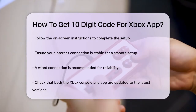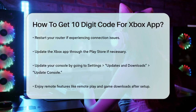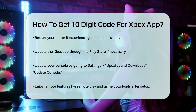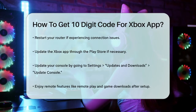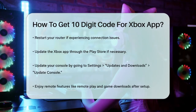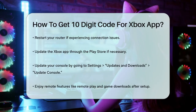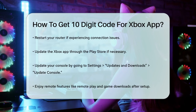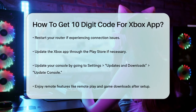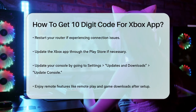If this happens, try restarting your router or updating the app from the Play Store. For your console, go to Settings, Updates and Download, then Update Console. By following these steps, you should be able to get your 10-digit code and connect your Xbox to the Xbox app without any issues. Remember, this process is straightforward and you'll be enjoying remote features like remote play and game downloads in no time.